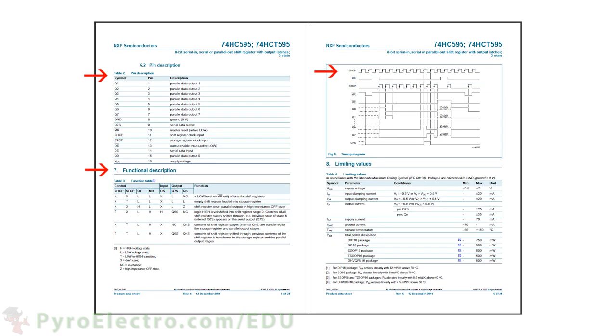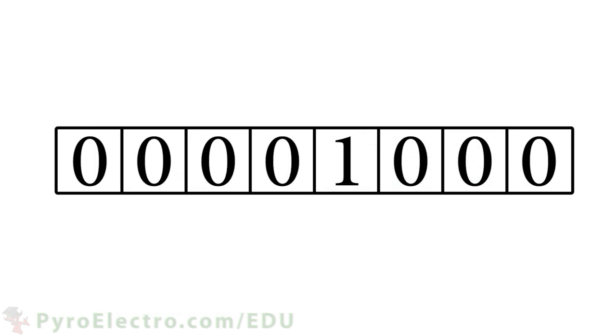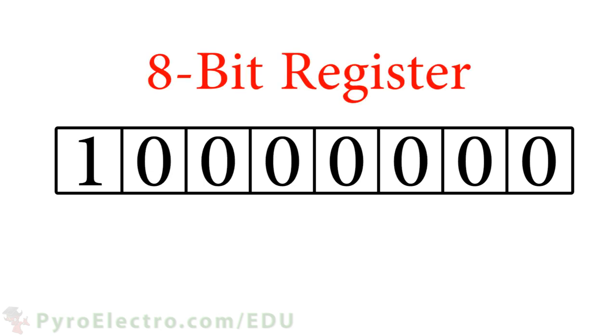On the final pages of the datasheet, you can see the pinout description, truth table, and timing diagram for the 8-bit shift register. A fun and quick experiment we can perform to see how much easier it can be to use these more advanced 7400 logic ICs is to build an 8-LED Knight Rider circuit.